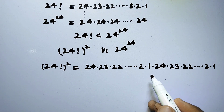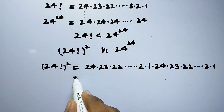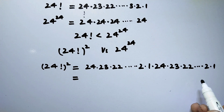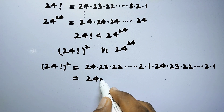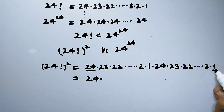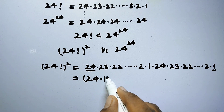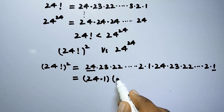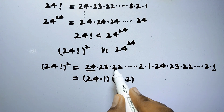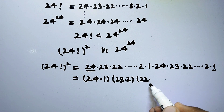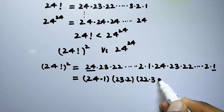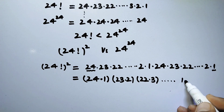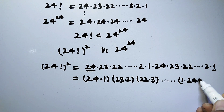To handle this large product, we will make pairs of numbers — pairing larger numbers with smaller numbers. For example, the first pair is 24 times 1, the second pair is 23 times 2, the third pair is 22 times 3, and so on, until the last pair is 1 times 24.